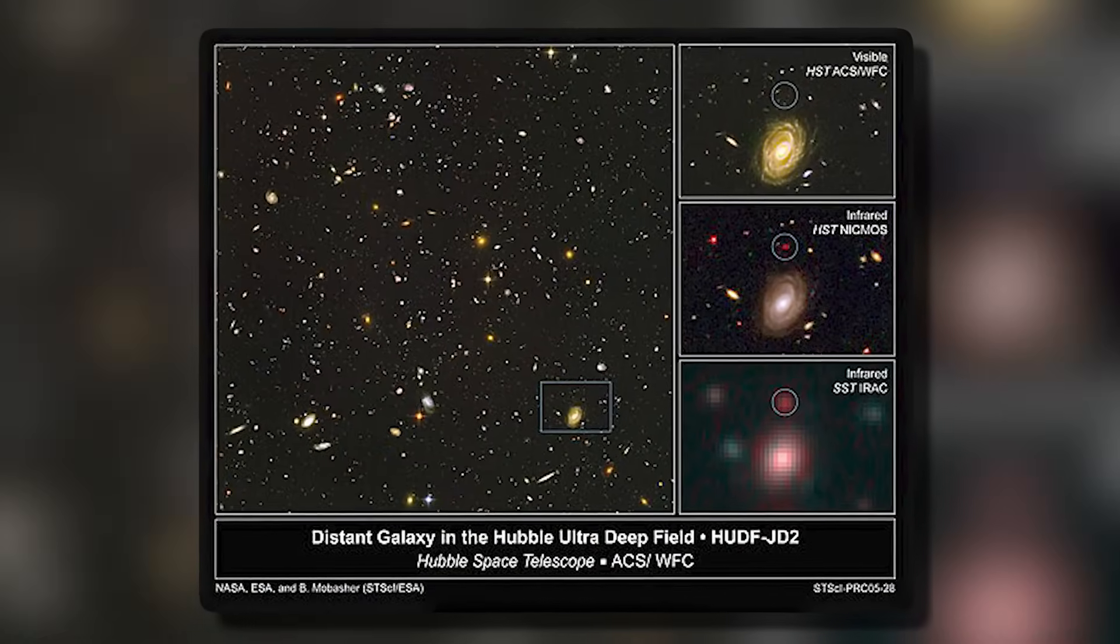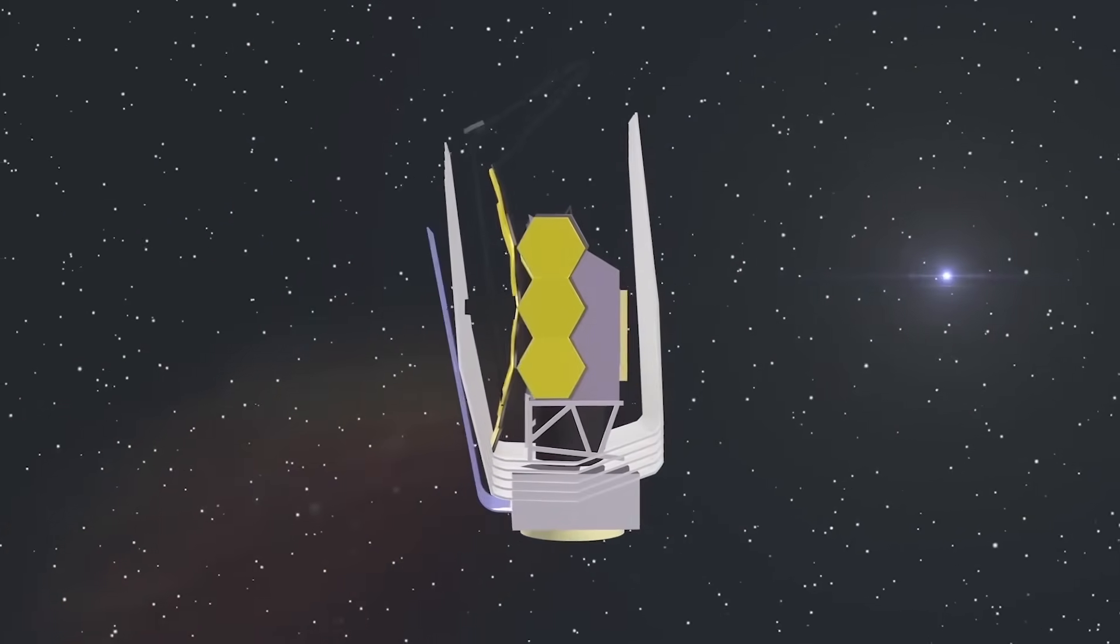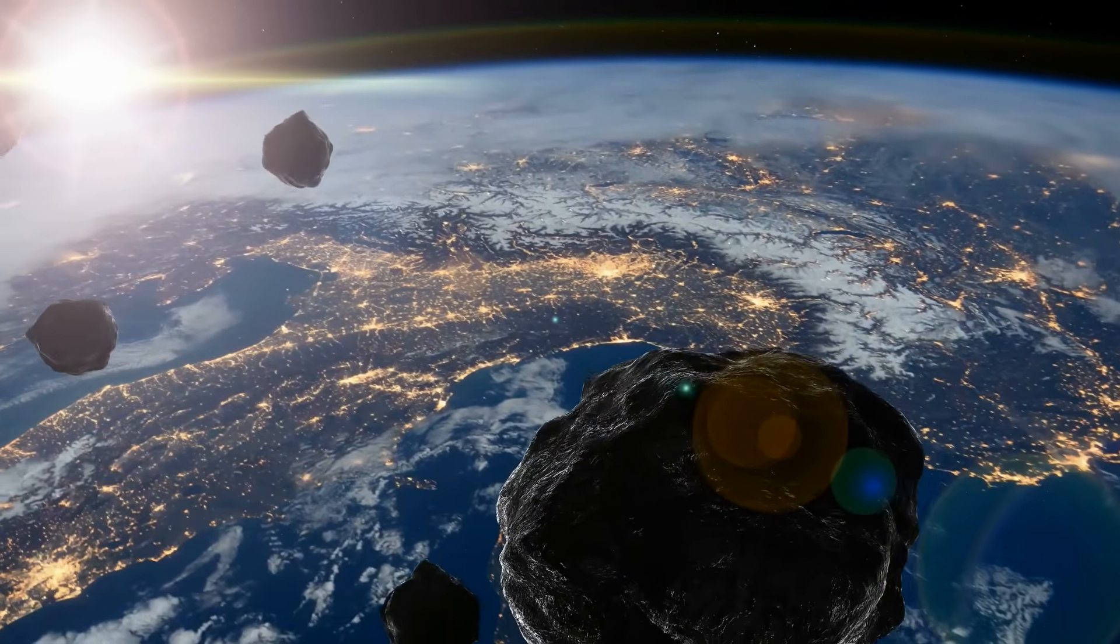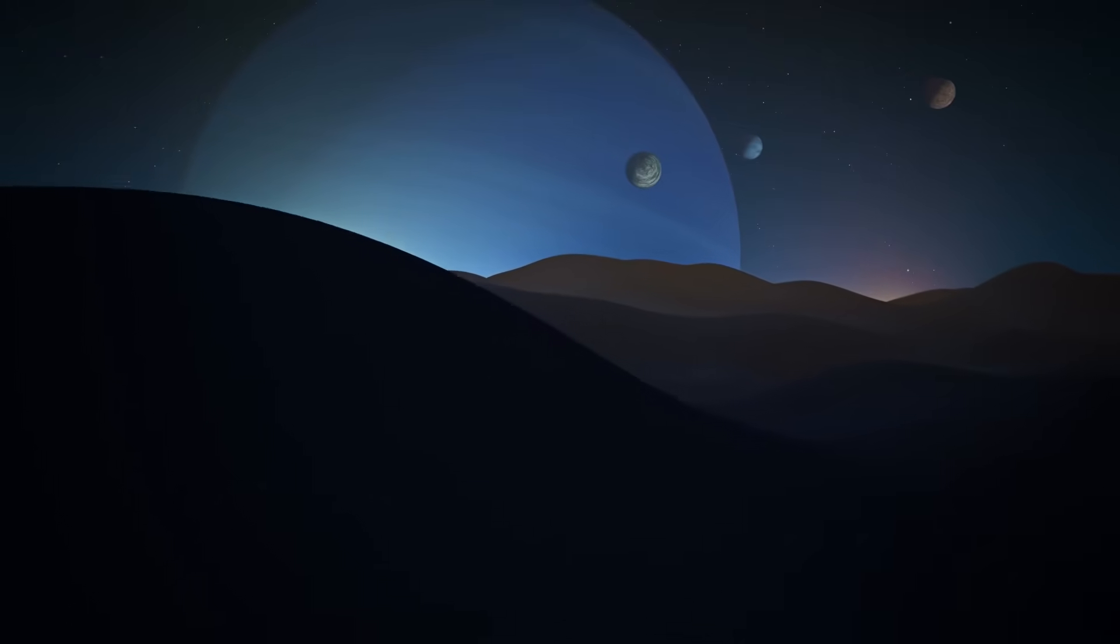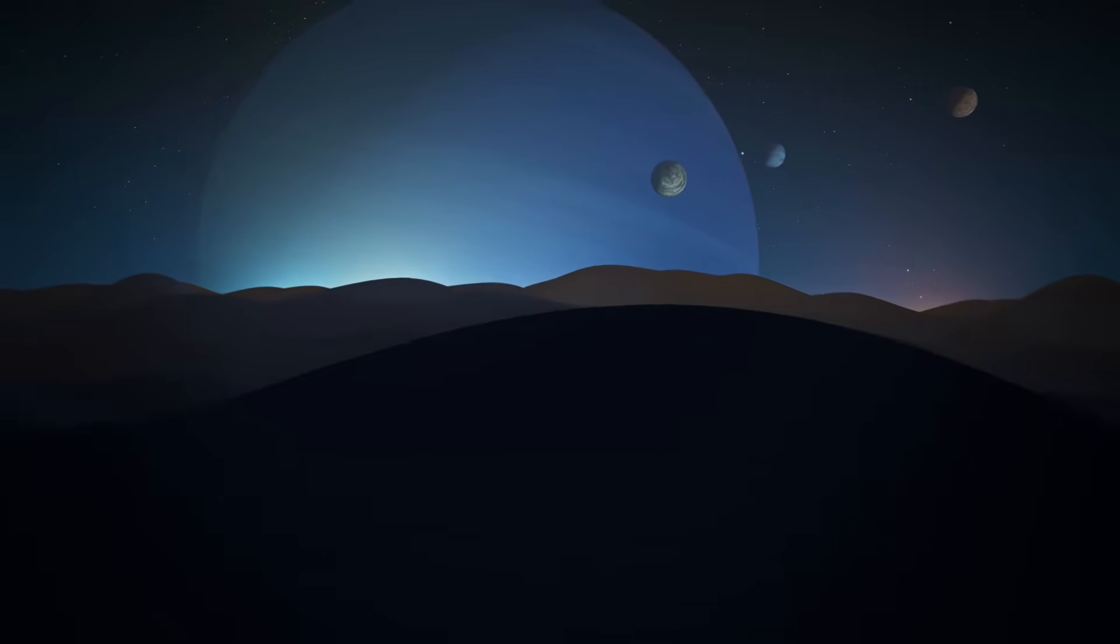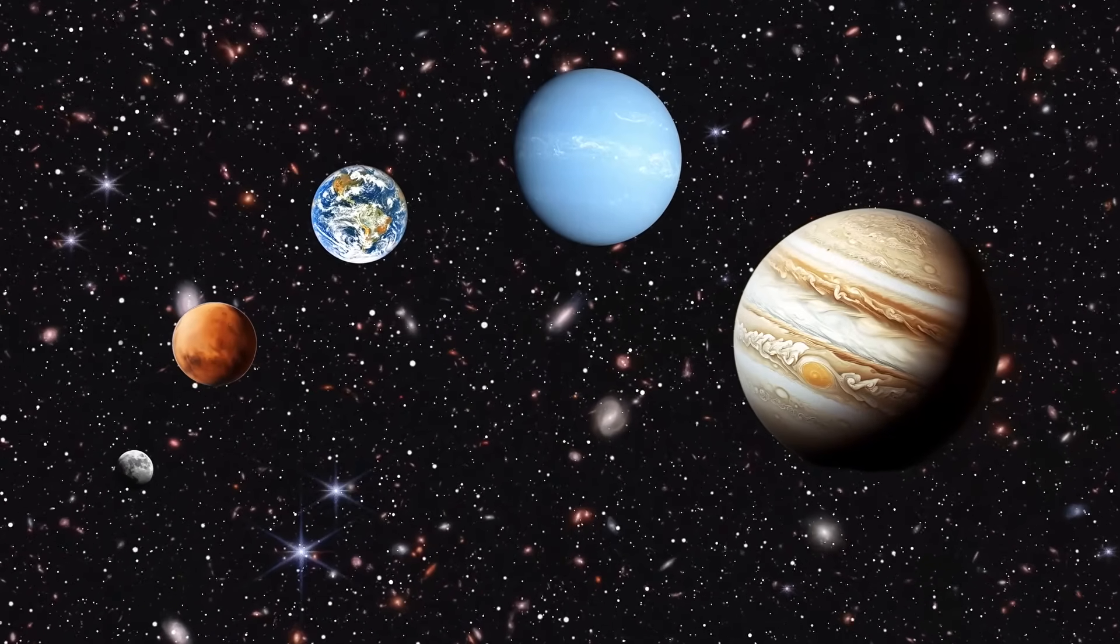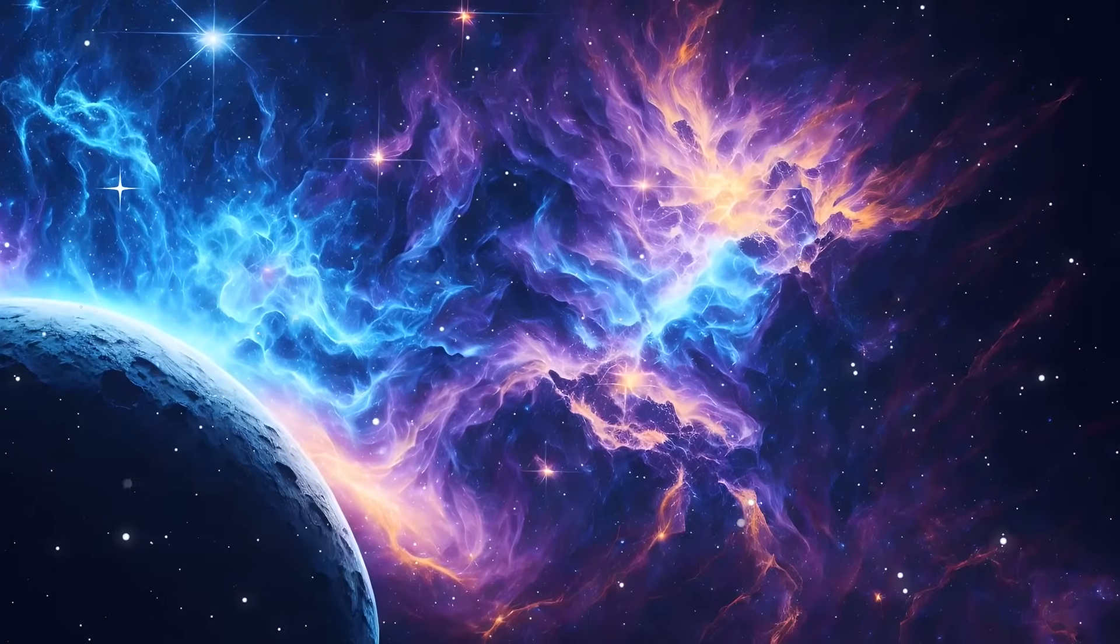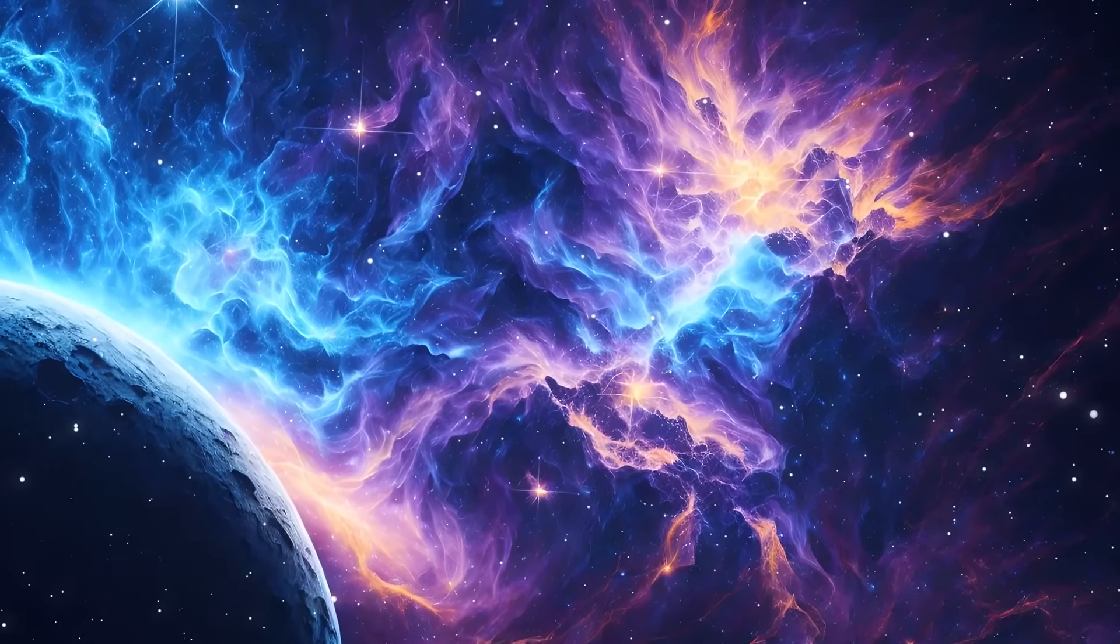Looking at the images and data from Webb, it's impossible not to feel the vertigo of scale. We are peering across epics, tracing the universe back to a time before Earth existed, before the sun was born, before atoms as we know them even coalesced into stable forms. And yet from that ancient chaos, the seeds of everything we now know, planets, stars, life, were already being sown. This profound connection between the very old and the very new underscores the unity of the cosmos across time and space.